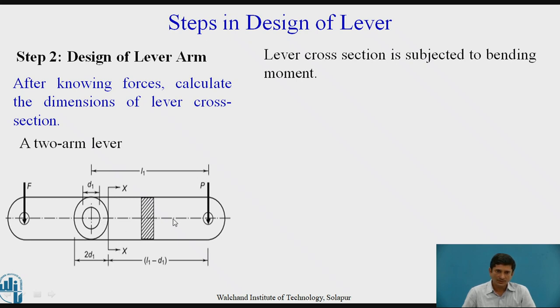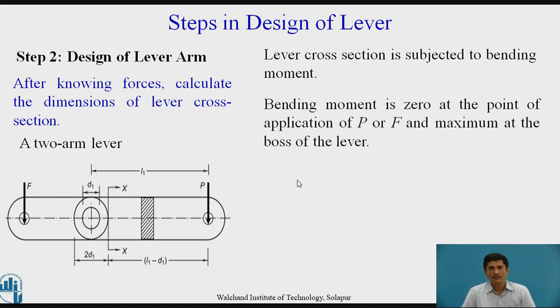The bending moment is maximum at section XX. MB equals P times (L1 minus D1). It is the weak section where the lever may fail or it is prone for failure. Bending moment is zero at the point of application of P or F and maximum at the boss section. Here the bending moment will be maximum.